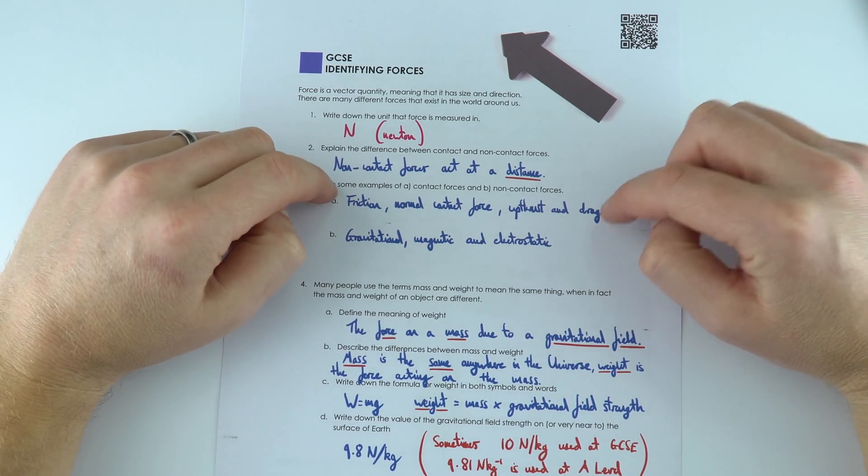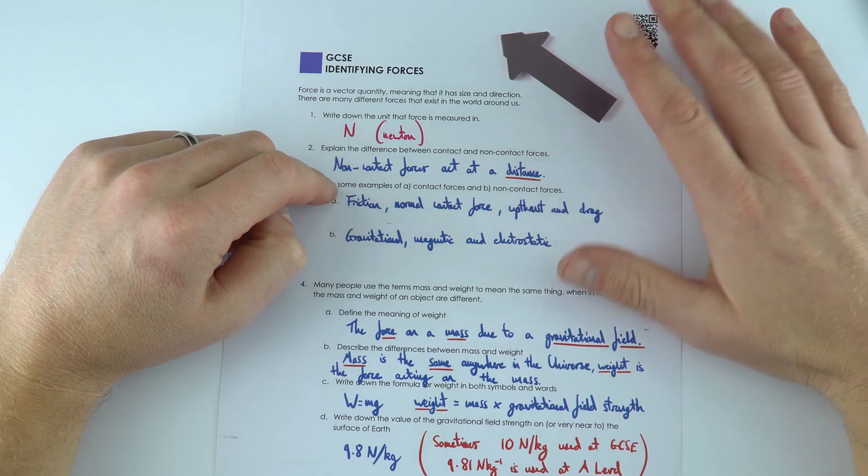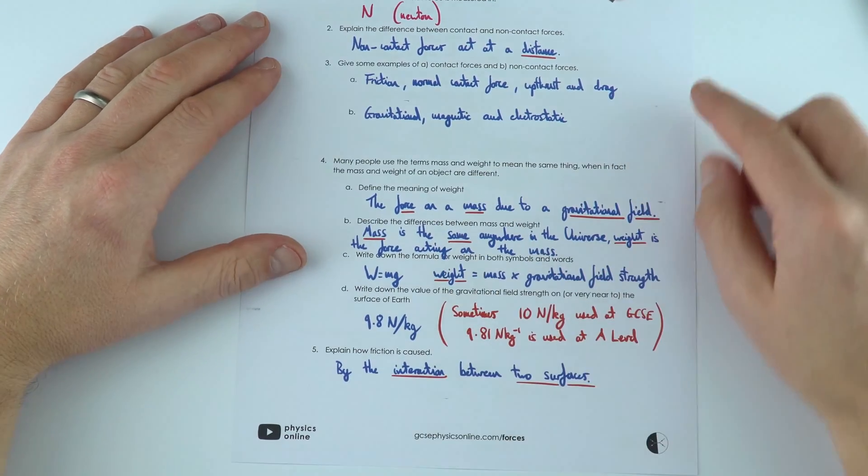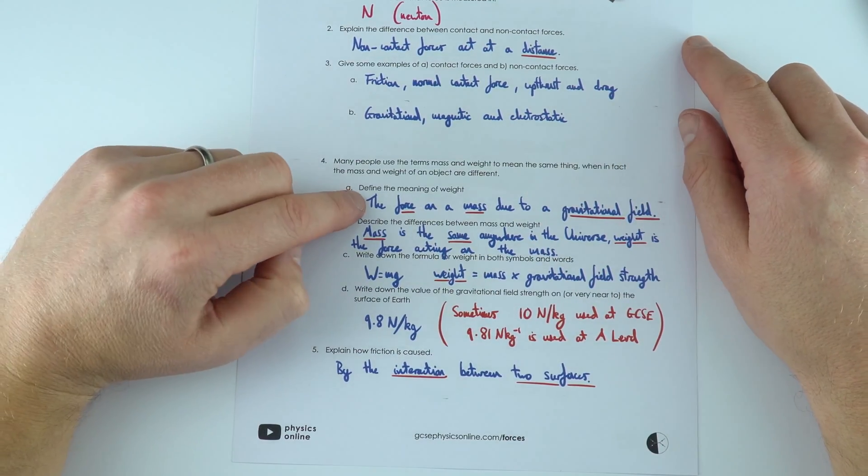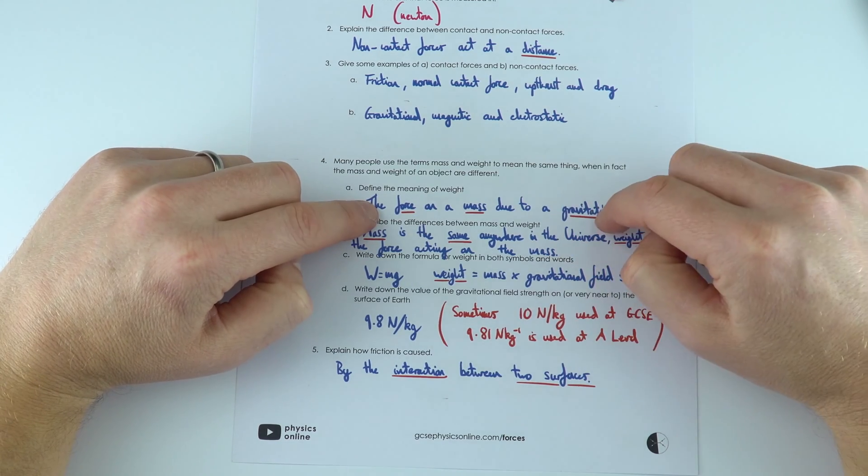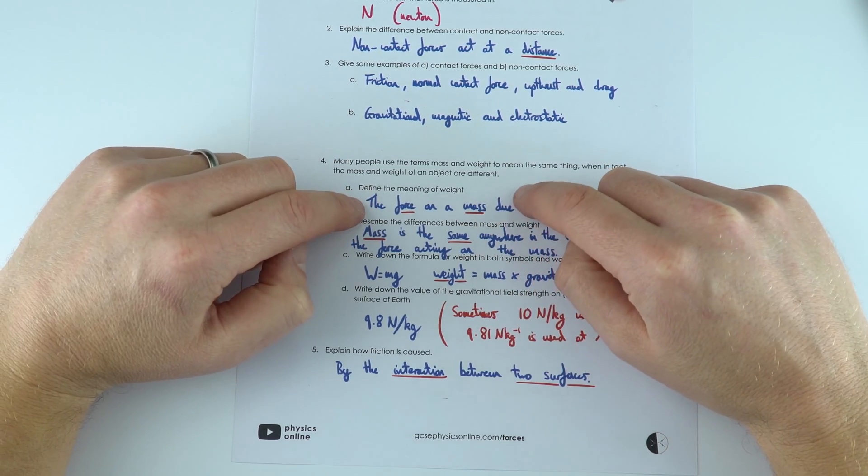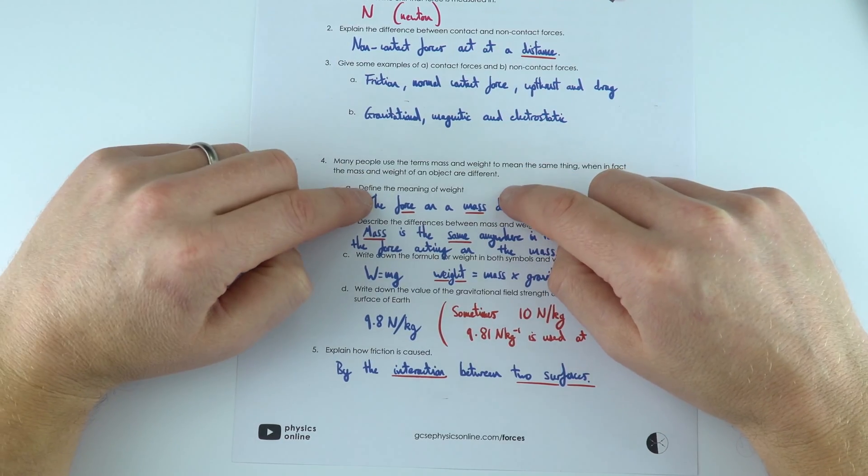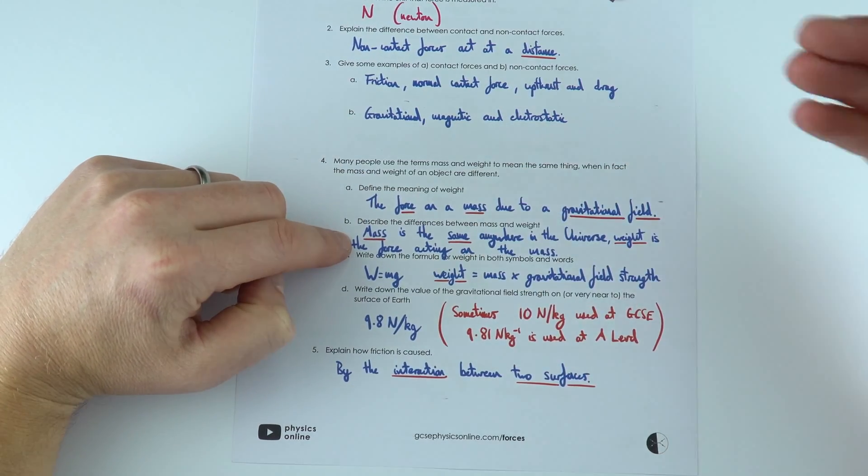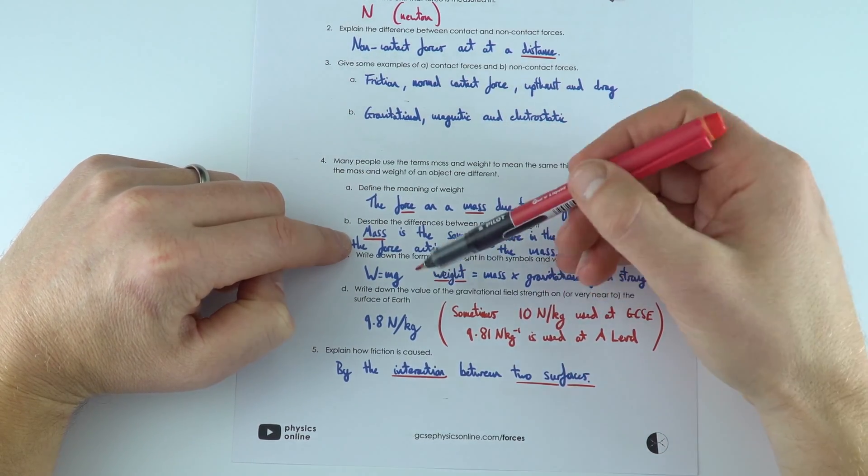Drag can be things like air resistance or water resistance. We then have a bit more about what we mean by weight. Weight is the force on a mass due to a gravitational field, which means the weight of an object can change depending on where it is in the solar system or universe. But mass is always going to be the same and is measured in kilograms.